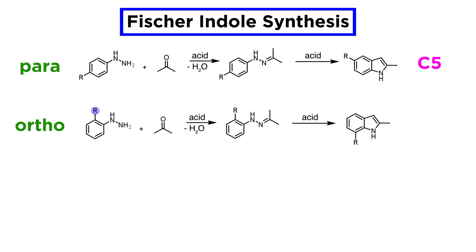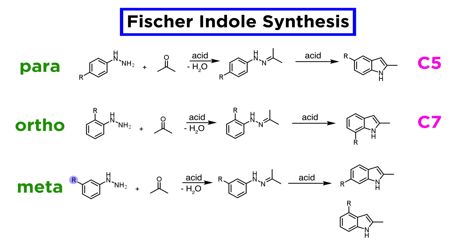If the hydrazine is ortho-substituted, the substituent will always end up at the C7 position, because one of the carbons that could close the second ring is occupied. However, if the substituent is meta, two possible products exist, because there are two carbons that are free to be involved in the cyclization, resulting in the C4 and C6 substituted products.